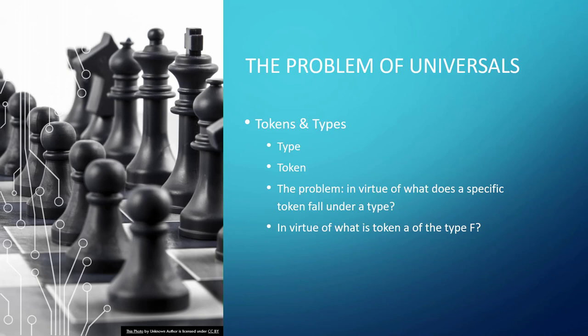When it comes to universals and types, there's some key terminology. A type is a general kind of thing, such as blue, human, or computer. A token is a specific individual of a type, such as Sally's blue shirt, George Bush, or Steve's MacBook. The problem of universals in terms of tokens and types would be: in virtue of what does a specific token fall under a type? For example, in virtue of what is George Bush a human? Put more formally, in virtue of what is token A of the type F?